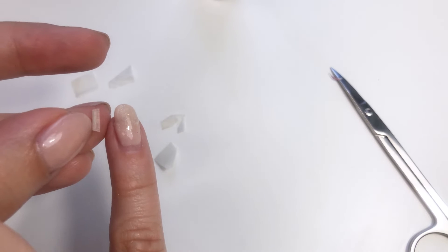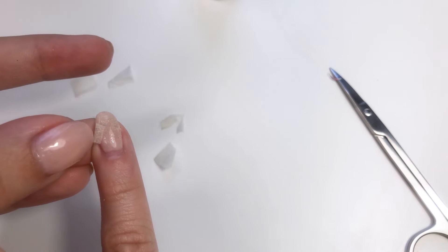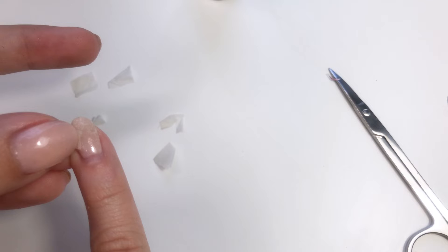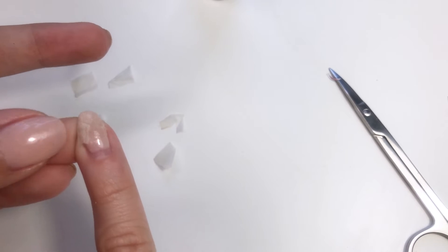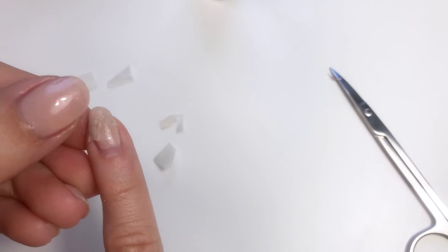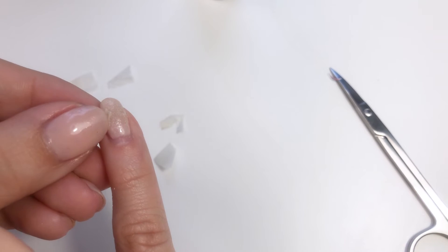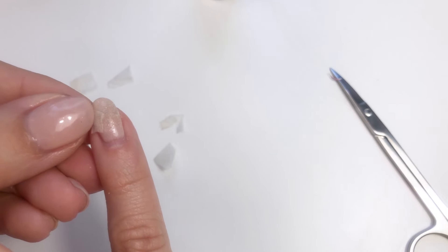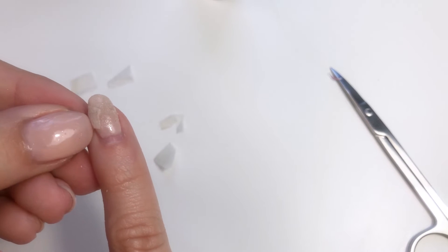I've seen other videos recommend the teabag technique but their mistake is that they're putting just one layer of teabag. Now in my opinion and from my experience this is not gonna work. You have to put a few layers. You have to build an apex. One teabag is just not gonna hold your whole crack.